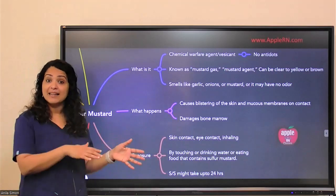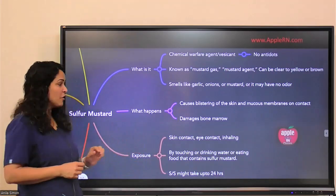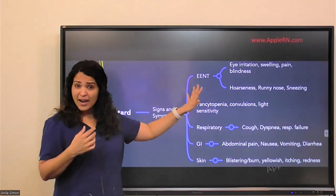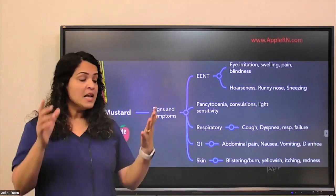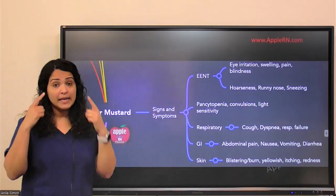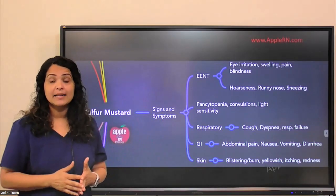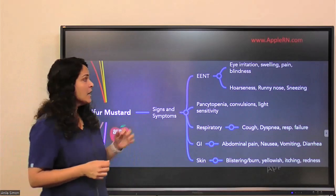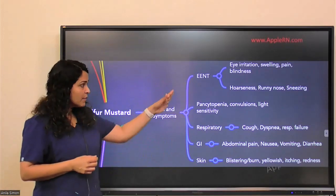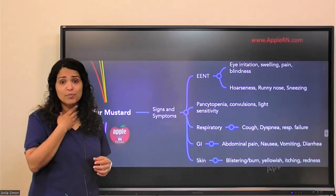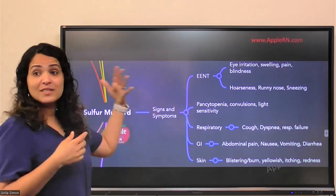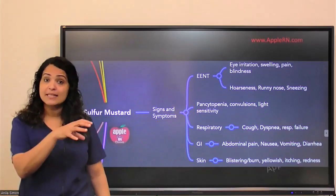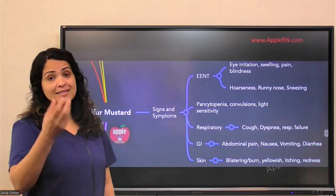So if someone feels okay immediately after exposure, that does not mean they are not affected. Going into signs and symptoms — in the eye, ear, nose, and throat area, you will see eye irritation, swelling, really bad ocular pain, and it can even cause blindness. There may be blurred vision, double vision. They may experience hoarseness, problems in the larynx area, runny nose, and sneezing — it might feel like an allergy, but it's not. Pancytopenia can also occur because Sulphur Mustard affects the bone marrow.